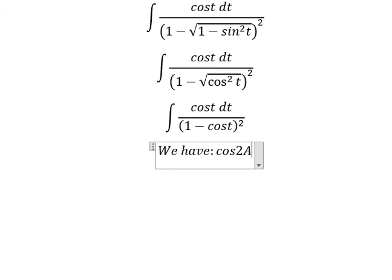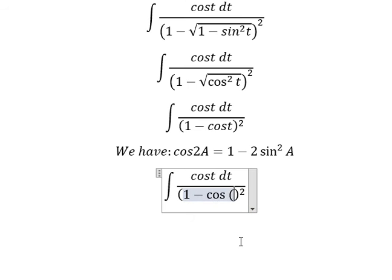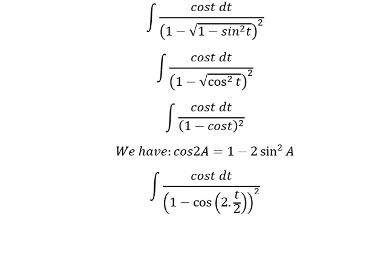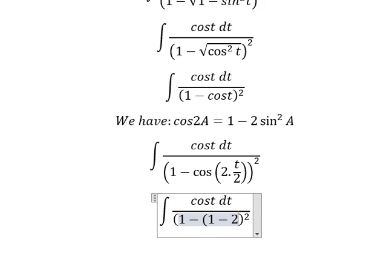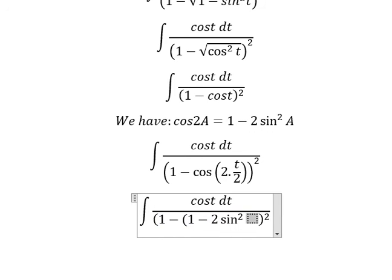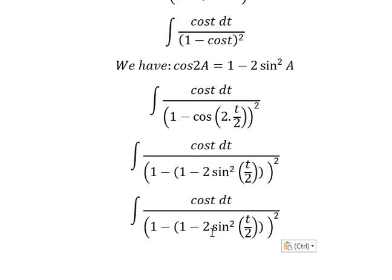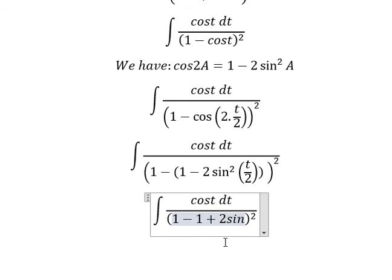Next we have cos(2t) equals 1 minus 2sin²(t). In this situation, we treat t as 2 multiplied by t/2, and we change this for 1 minus 2sin²(t/2). Opening the parenthesis gives us negative 1 plus 2sin²(t/2).